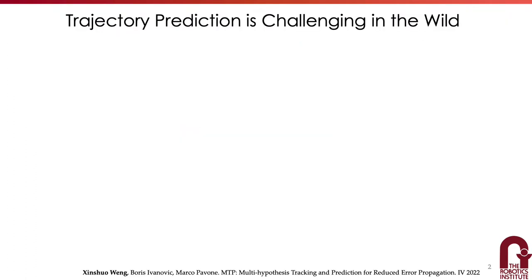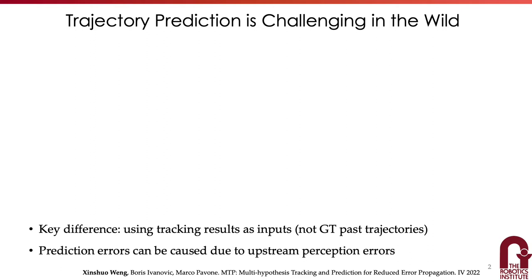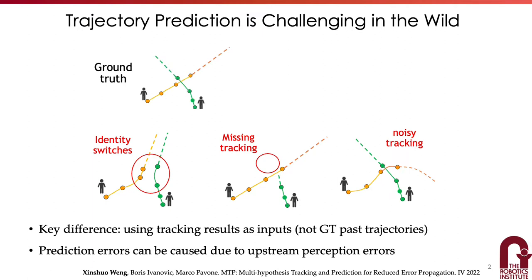Our work targets a challenging problem: multi-agent trajectory prediction in the wild. In contrast to the standard idealized setting of trajectory prediction, which uses ground truth trajectories as input, we are using onboard tracking results as input for trajectory prediction. As a result, predictions can be challenging and errors can stem from upstream perception noises, such as identity switches, missing tracking, and noisy tracking. All of these could lead to prediction results significantly different from when using ground truth trajectories as input.